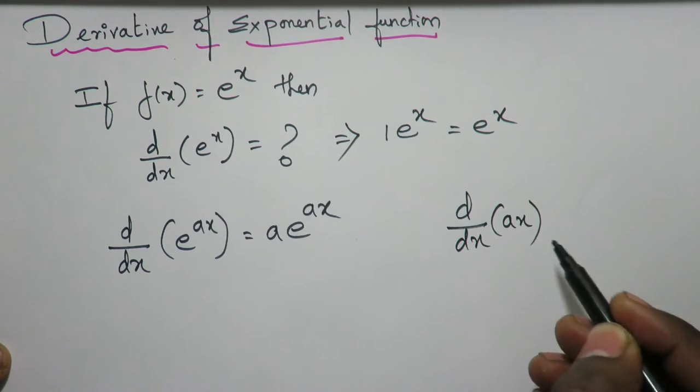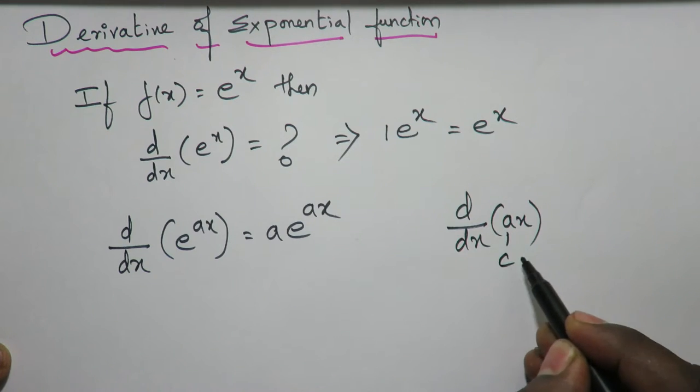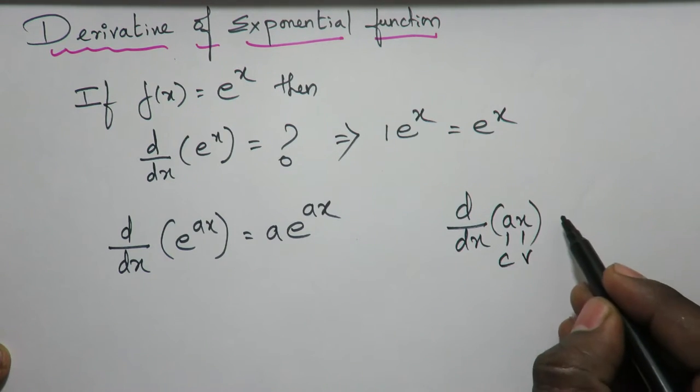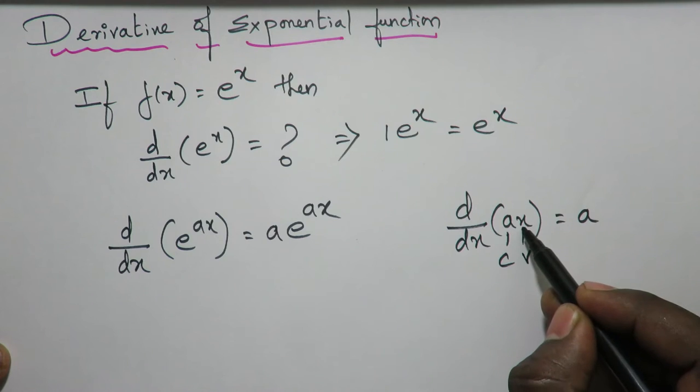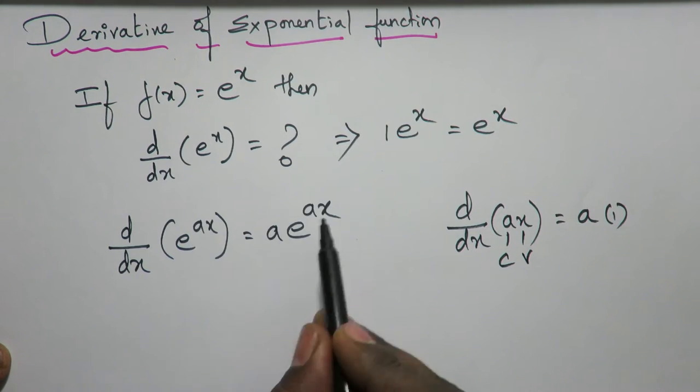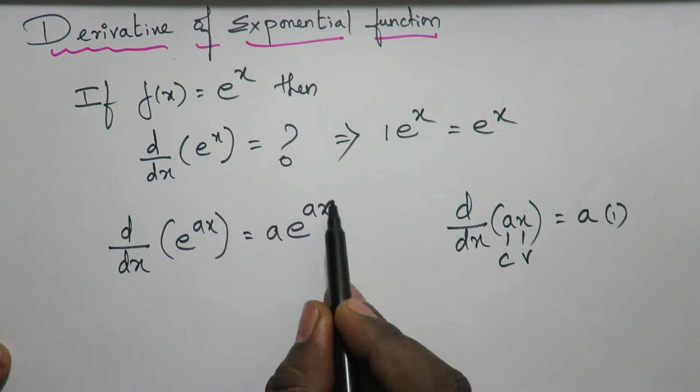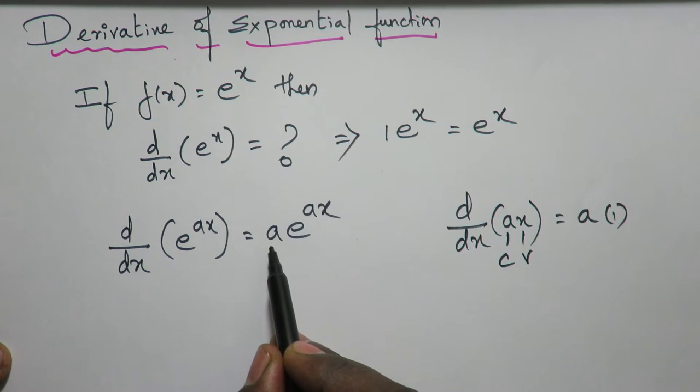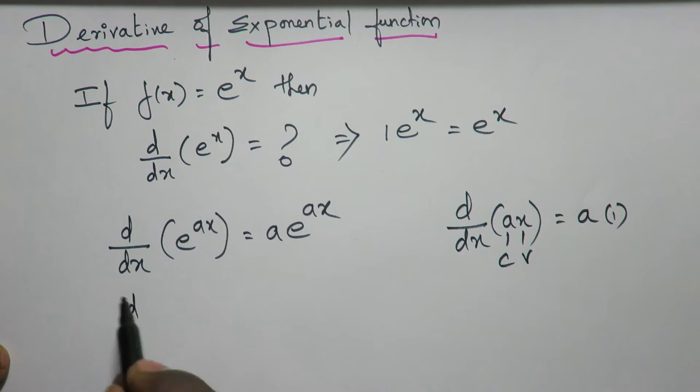Differentiation of ax: constant multiplied by a variable. Keep the constant as it is. Differentiation of x is 1. So that's why for e^ax, write e^ax as it is and differentiate ax and write it in front. Now see this, example 1 and 2.